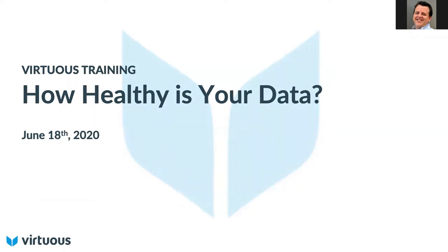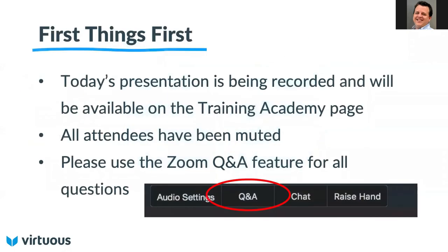And this month, our topic is: how healthy is your data? That's what we want to be looking at this month. So before we get started, to give everybody a chance to get settled, we do have a few housekeeping items to attend to. First things first, today's presentation is being recorded, and we will be making this available on the Training Academy page.